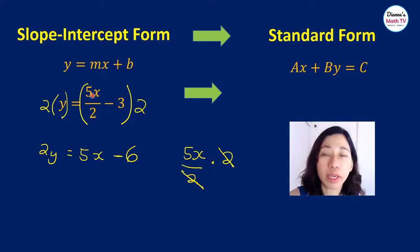What are we doing here? We are distributing 2. 5x over 2 times 2 equals 5x. 3 times 2 equals 6. So it's just so that you will see that I am distributing.